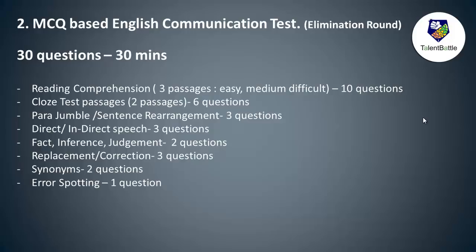Next are the important updates for the MCQ-based English communication test, which is also an elimination round. Students who clear the pseudo code round come for this test. It has 30 questions and 30 minutes. For reading comprehension, there were around three passages — the first was easy, the second was medium level, and the third was a little difficult. The total three passages had 10 questions.